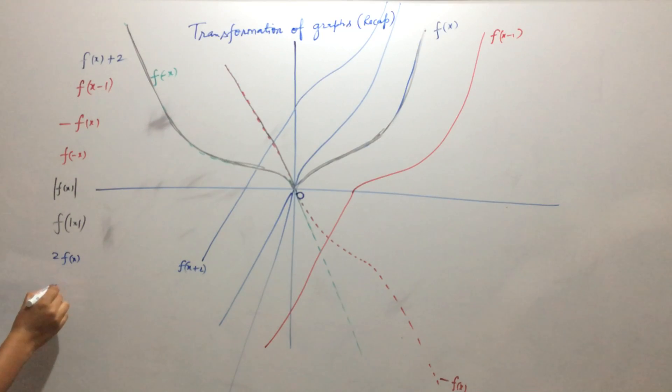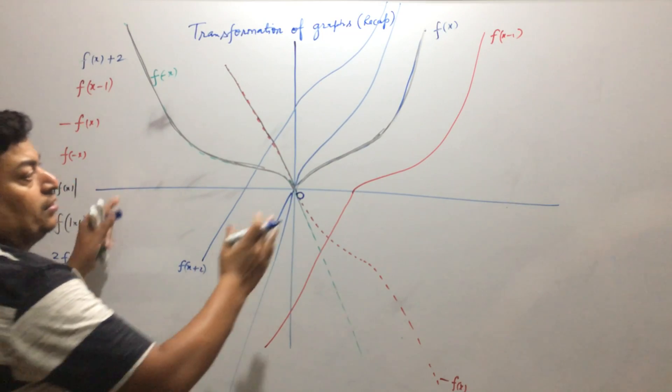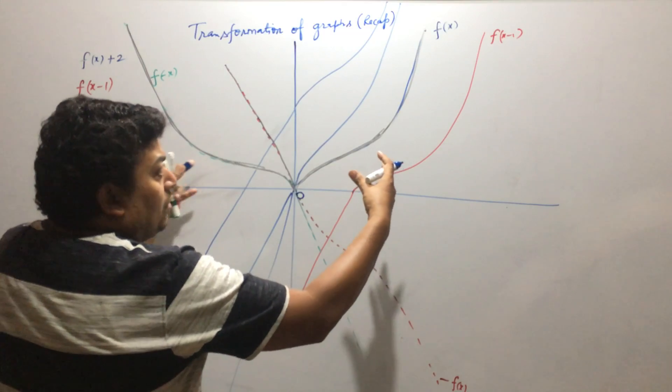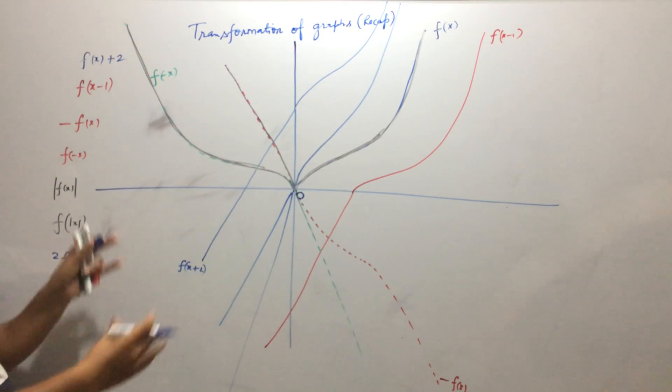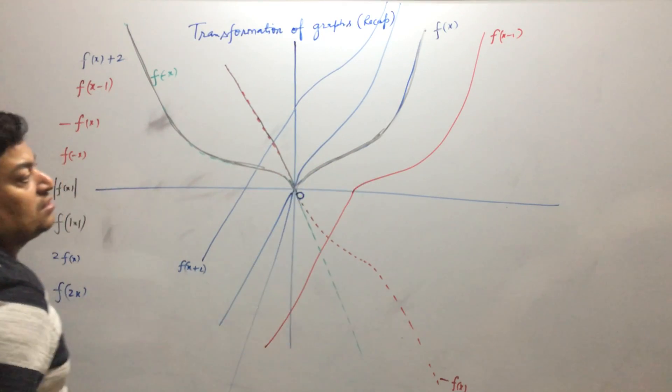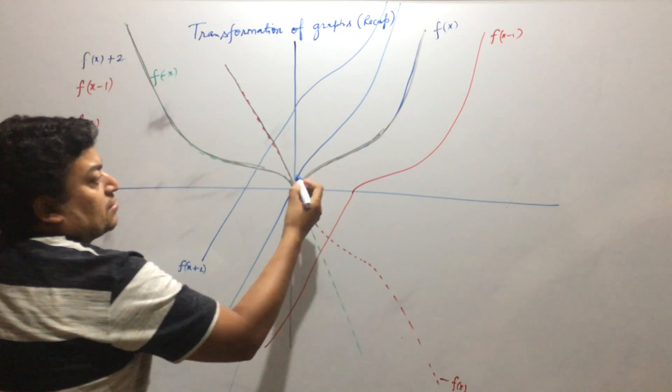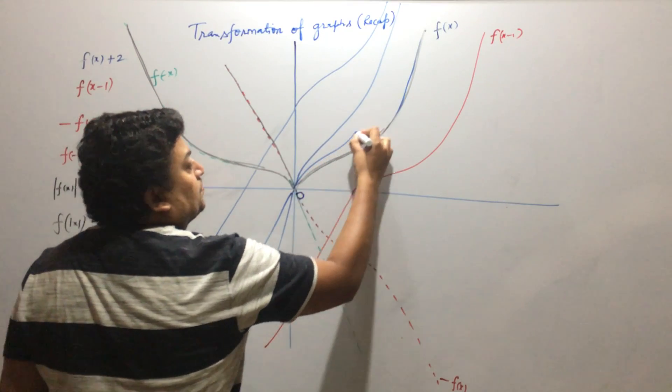How to draw the graph of f of 2x? So f of 2x will be obtained by compressing the graph along x axis. Compressing the graph along x axis. So that will be something like this. So here we can do the graph of f of 2x.